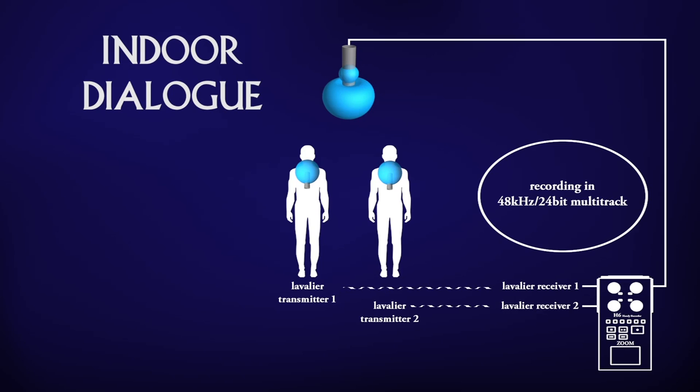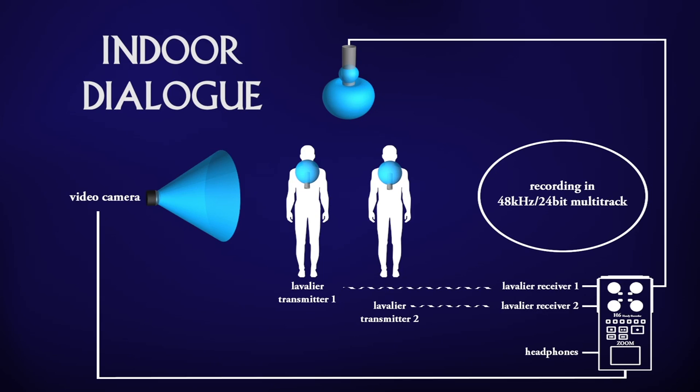An extra hypercardioid microphone on a boom pole could be very helpful to pick up the dialogue and some extra sounds that happen during the scene. You will be monitoring the recording with headphones. The sound output of the recorder is connected to the camera.